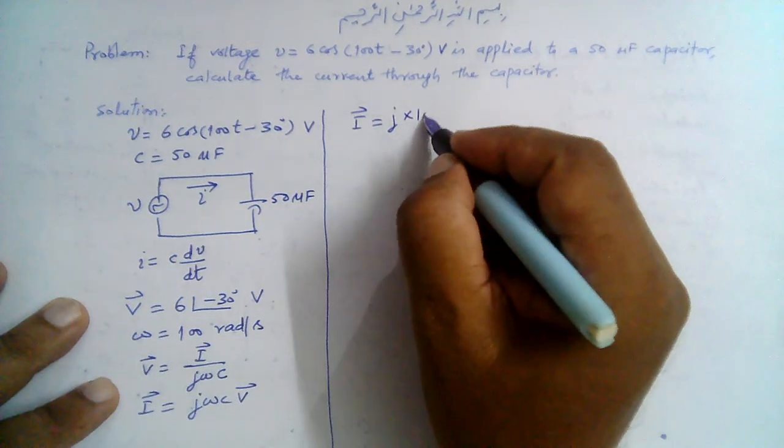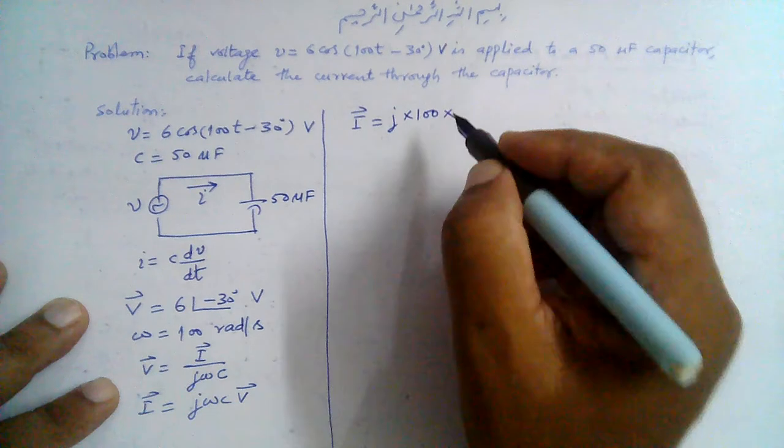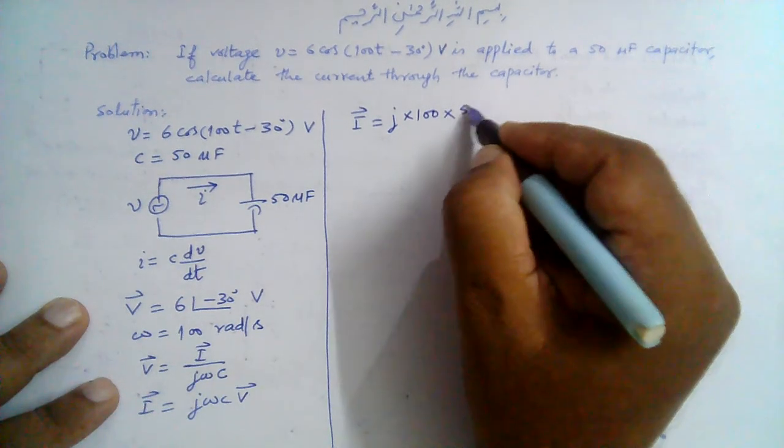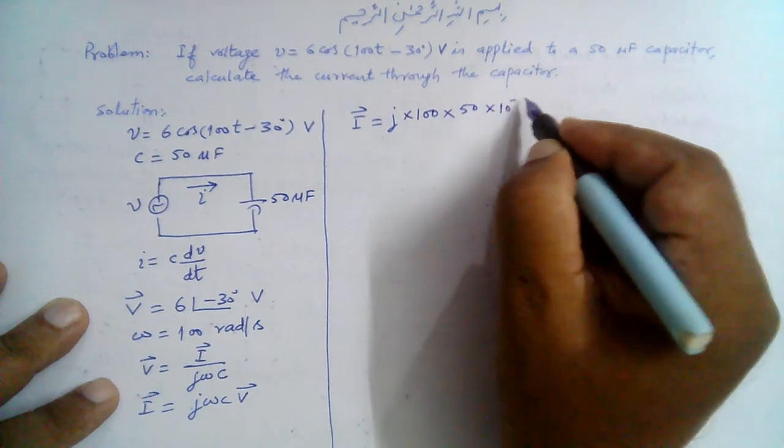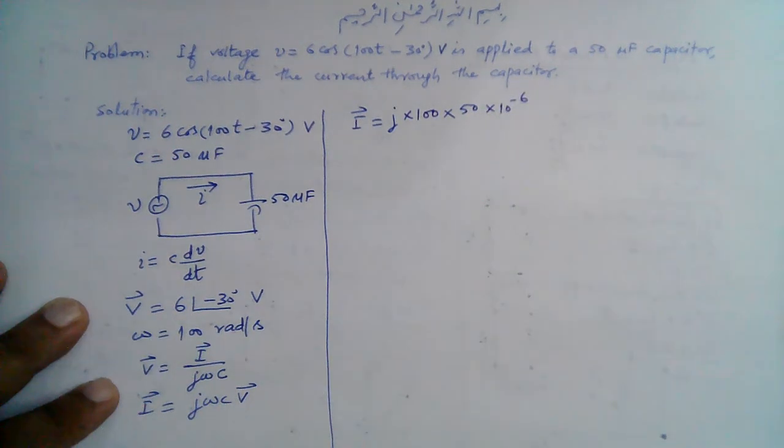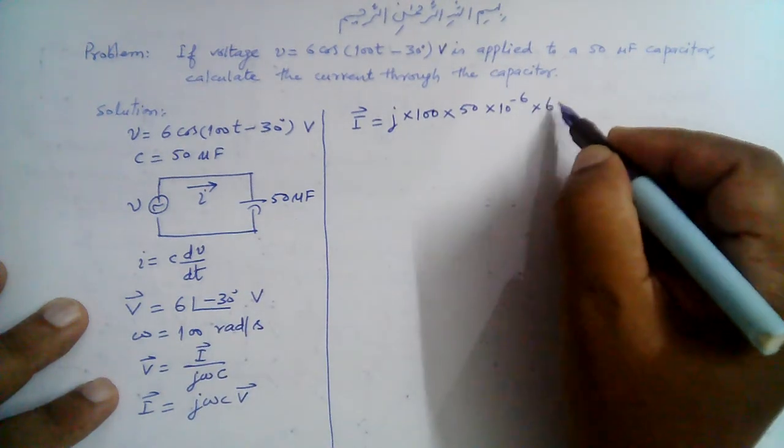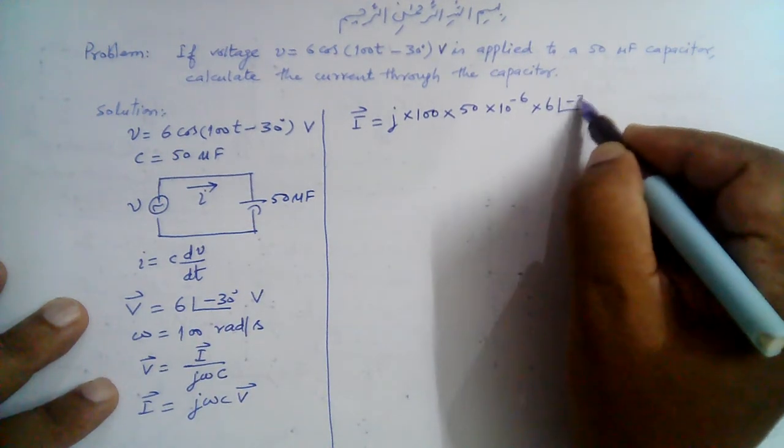We need to find this current I̅. I̅ = j × omega, which is 100, times C, which is 50 microfarads, so 50 × 10^-6, and the phasor voltage is 6∠-30°.